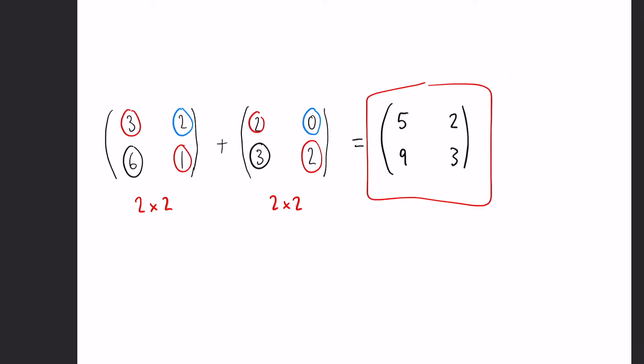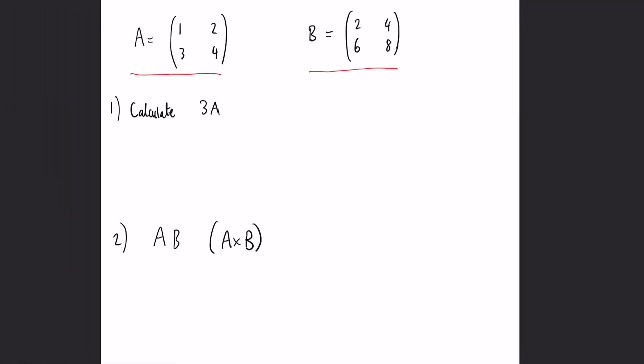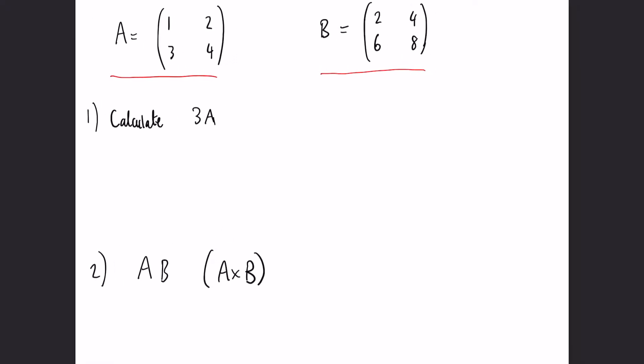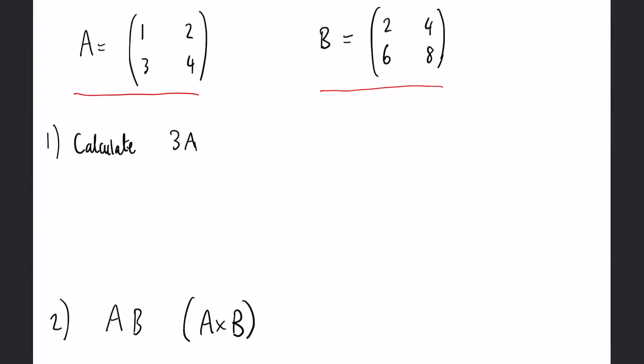When it comes to multiplying matrices, we have many different variants. We've got two matrices here, A and B, and they are both 2x2 matrices - two rows and two columns. First, we have multiplying by a number or a constant.